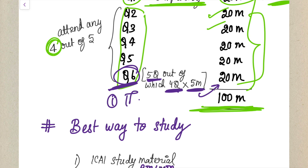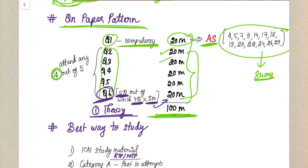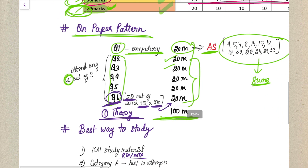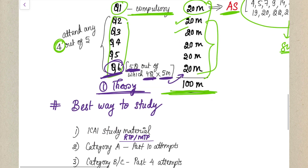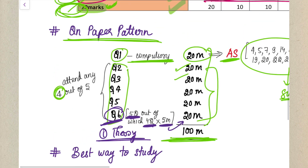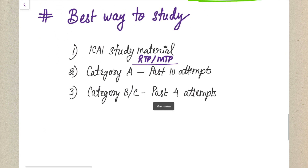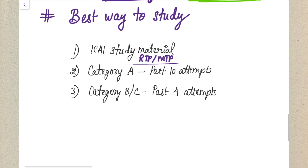In Question Number 6, one question usually comes from theory. If you are planning to leave one question as optional, you can leave out that theory question. Prepare your Advanced Accounts paper as a practical paper - only 5 marks of theory will be questioned, which you can leave without any issue.